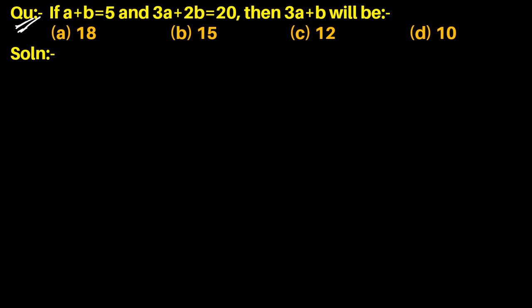Question: if a plus b equals 5 and 3a plus 2b equals 20, then 3a plus b will be? So here, given that a plus b equals 5 and 3a plus 2b equals 20 — call these equation first and second.